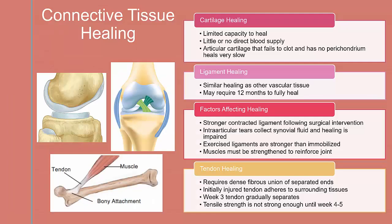Connective tissue healing — cartilage healing. Cartilage has a limited capacity to heal. There is little to no direct blood supply to most cartilage. Chondrocytes and matrix disruption result in a variable healing. Articular cartilage that fails to clot and has no perichondrium heals very slowly. If an area involves subchondral bone, an enhanced blood supply or granulated tissue is present and healing typically proceeds normally.